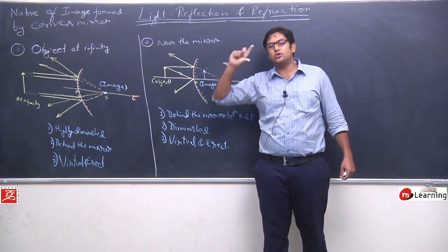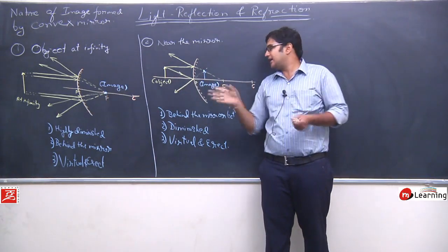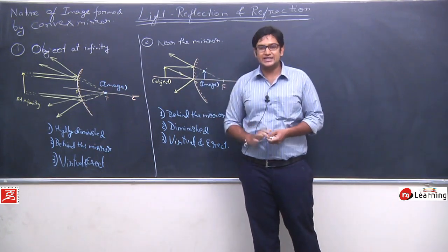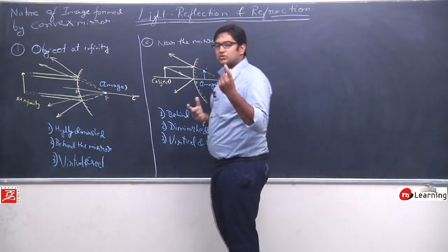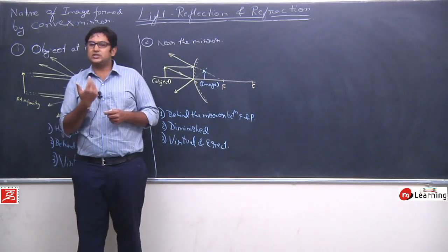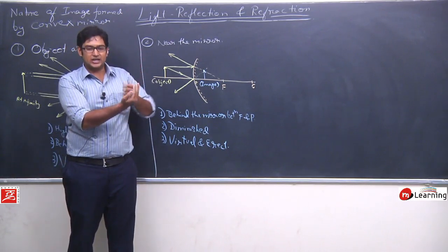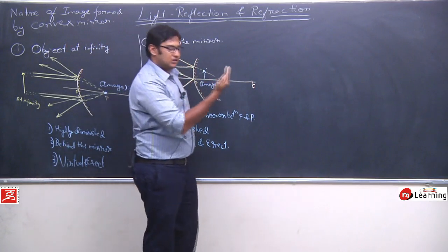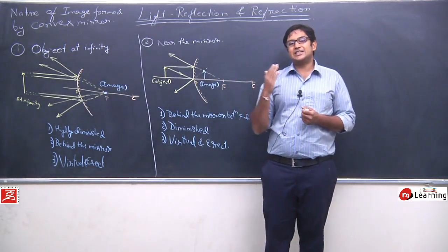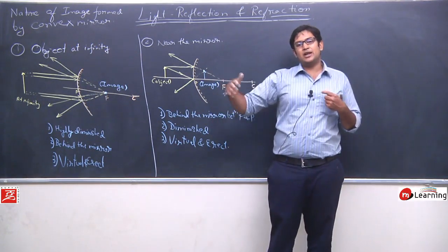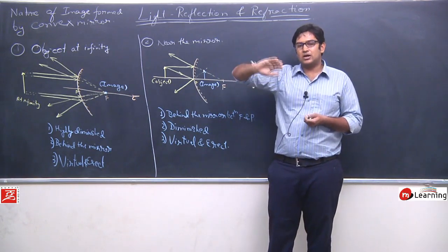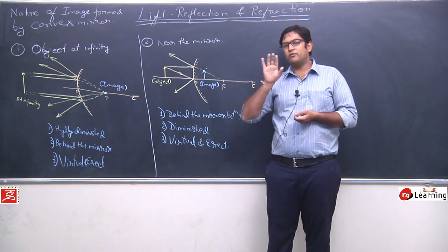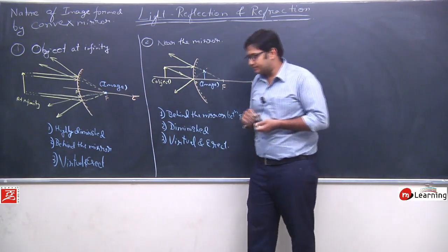As I move the object closer to the mirror, the image also shifts closer to the mirror, and the image size gradually grows. And finally, when you place the object right against the mirror at the pole, you can see that the image will be of the same size. To study this, you can use a spoon - a tablespoon. First hold the concave inward part in front of your face and slowly move it - you will see different types of images forming as the distance changes.